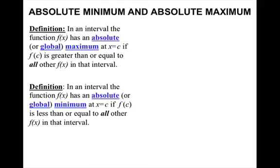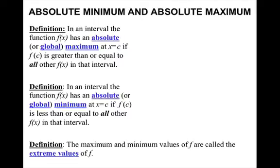And in an interval, the function f of x has an absolute, or global minimum, at x equals c, if f of c is less than or equal to all other f of x in that interval. The maximum and minimum values of f are called the extreme values of f.